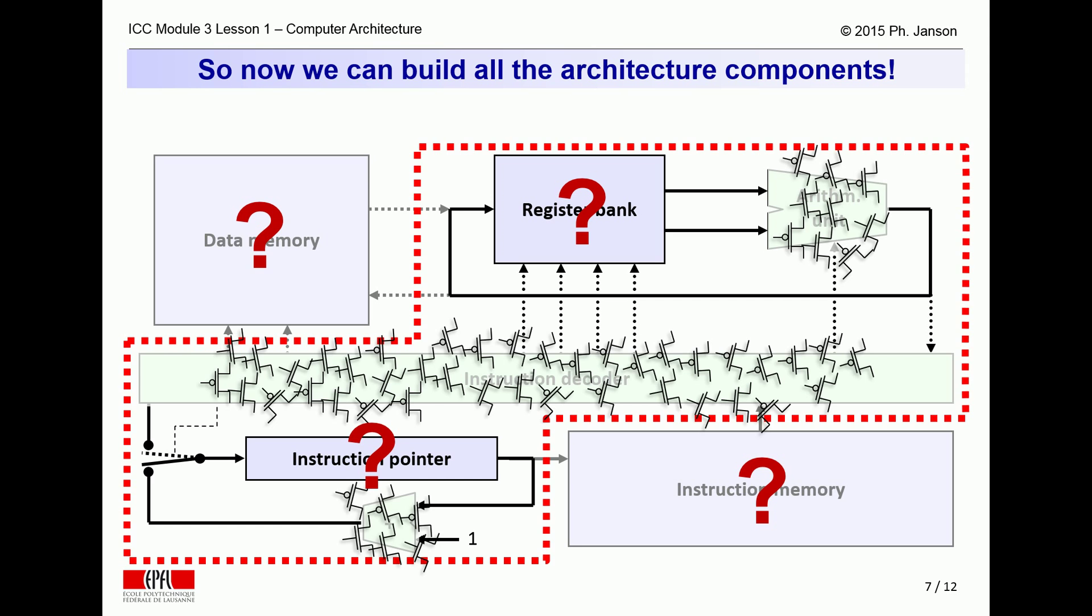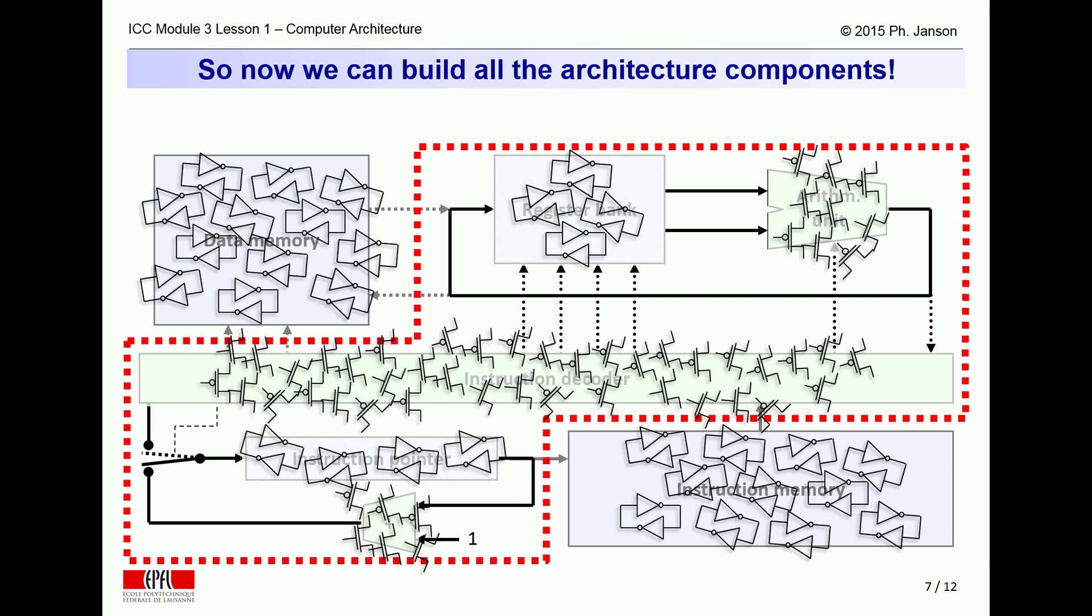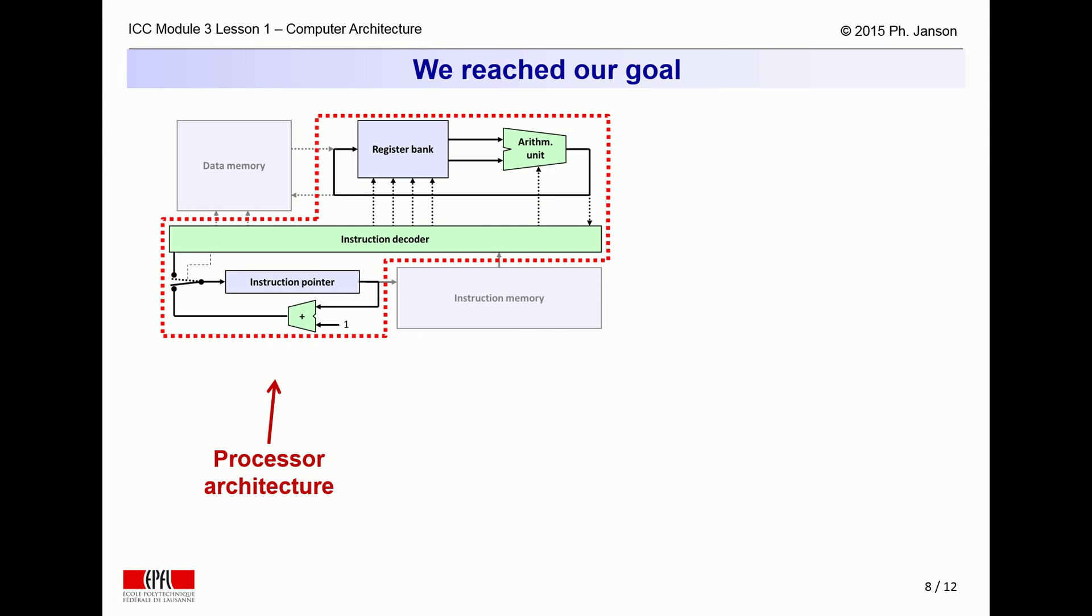The question marks left on the third slide of this clip are thus answered and can disappear, meaning we now know how to implement all the building blocks of a computer, the computing elements, as well as the memory elements. We thus have a fully implementable computer architecture.